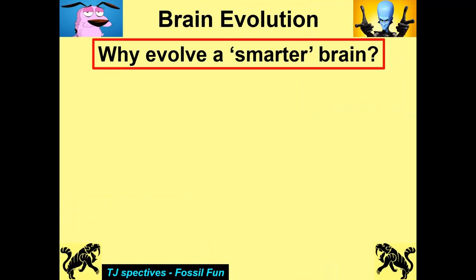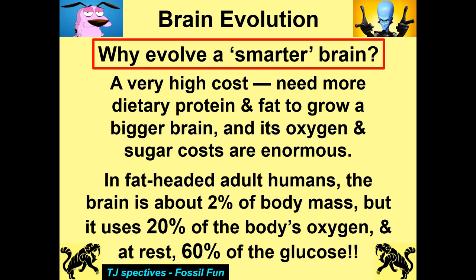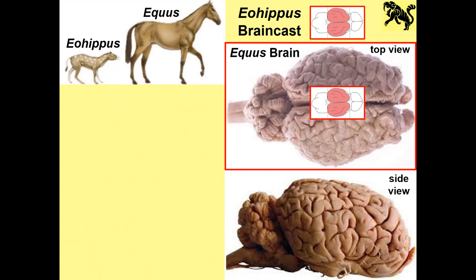Why evolve a smarter brain? It's a very high cost — you need more dietary protein and fat to grow a bigger brain. The brain is almost 50% lipids, with a lot of neurons to insulate. Its oxygen and sugar costs are enormous. In adult humans, the brain is about 2% of body mass but uses about 20% of the body's oxygen, and at rest burns 60% of the glucose circulating through your body. Greedy little organ — but it does rule everything.